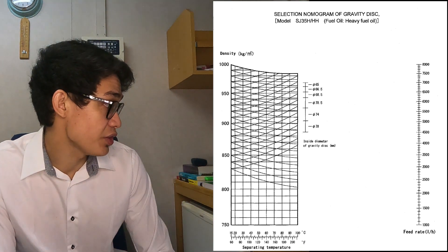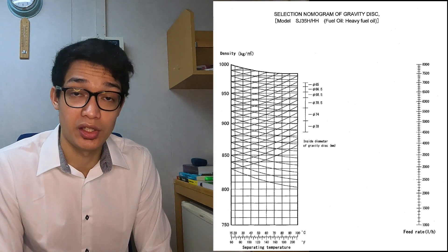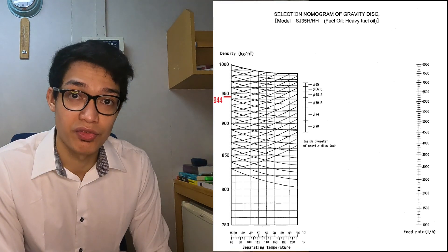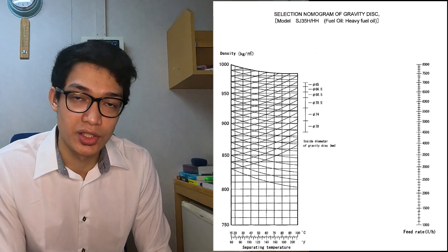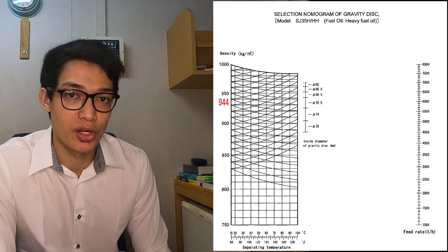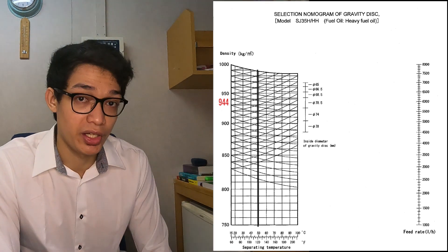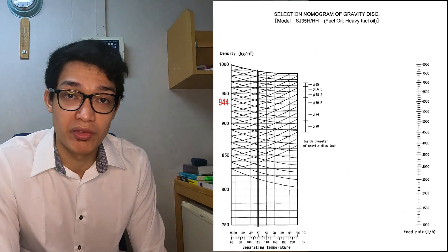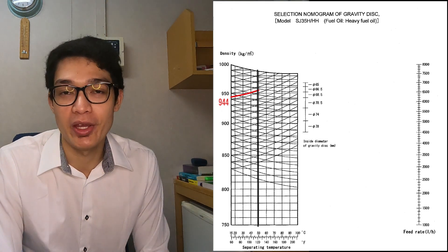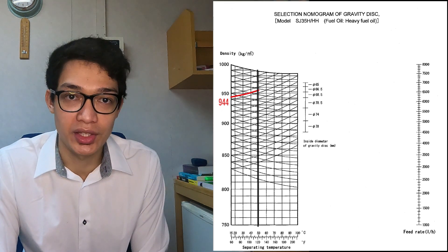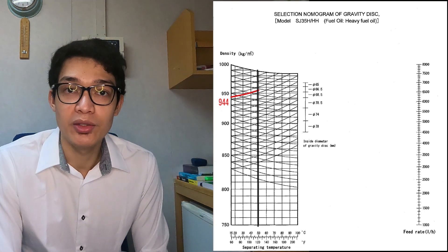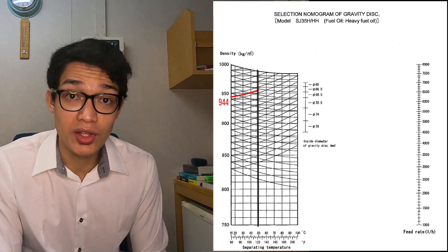To convert, we first locate the given density in the table — just as in Example 1 — and then locate the given temperature for that density, which is 50 degrees Celsius. After locating the 50-degree point, we draw a vertical line with 50 degrees as our reference point. Then we draw a rising curve from 944 until it intersects with that 50-degree vertical line. With that, we have already converted our specific gravity from 50 degrees Celsius to 15 degrees Celsius, and we can now repeat the steps from Example 1.